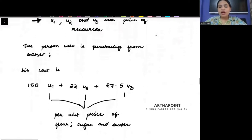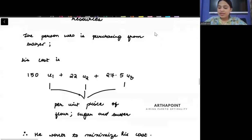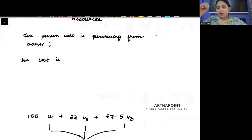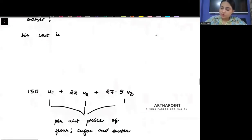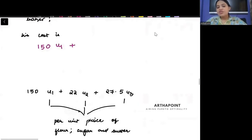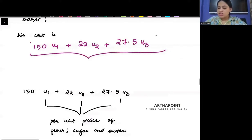But what do I want to ensure? Now I am selling this. I am selling flour, sugar, and butter. But how many kgs of flour have I purchased in the past? 150 kgs of flour, each at price U1. How many kgs of sugar? 22 kgs each at price U2. How many kgs of butter? 27.5 each at price U3.